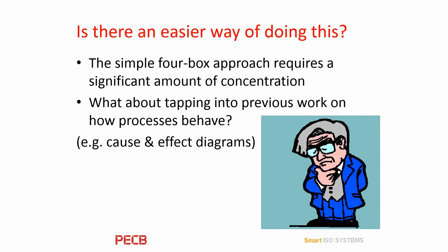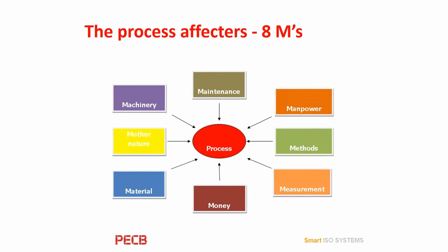We can take the work of Professor Ishikawa, who developed cause and effect diagrams to solve process problems in the Japanese car industry. We'll see in the next slide how the things that influence a process are defined, and we're going to use this as an alternative to the four-box approach. We spoke about the four M's previously — this is expanded a little bit more and we're talking about the process effectors. The eight process influencers are: maintenance, manpower, methods, measurement, money, material, mother nature, and machinery.